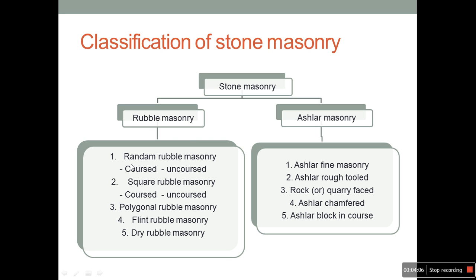When we see the classification of stone masonry, it can be classified into two types: rubble masonry and ashlar masonry. Rubble masonry is further classified into random rubble masonry (coursed and uncoursed), square rubble masonry (coursed and uncoursed), polygonal rubble masonry, flint rubble masonry, and dry rubble masonry. Ashlar masonry can be classified into ashlar fine masonry and others.